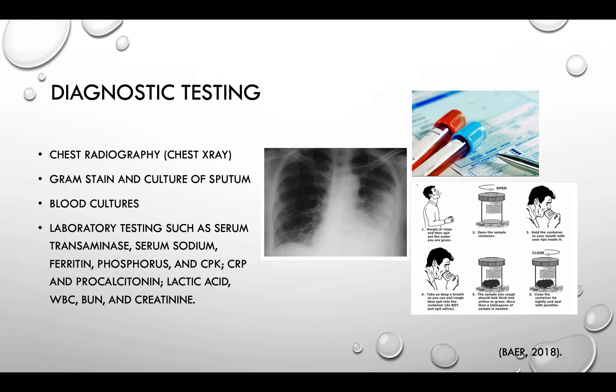Chest x-rays are recommended in all patients with suspected CAP to exclude conditions that mimic CAP and to confirm the presence of an infiltrate compatible with CAP. Gram stain and culture of sputum is a reliable diagnostic if performed on a well-collected specimen without saliva contamination and if a predominant organism is present. Gram stain shows few or no predominant organisms in patients with atypical CAP. Blood cultures from all patients with CAP may also be collected, because some bacterial pathogens such as Strep pneumo and H. influenzae are frequently associated with positive blood cultures.